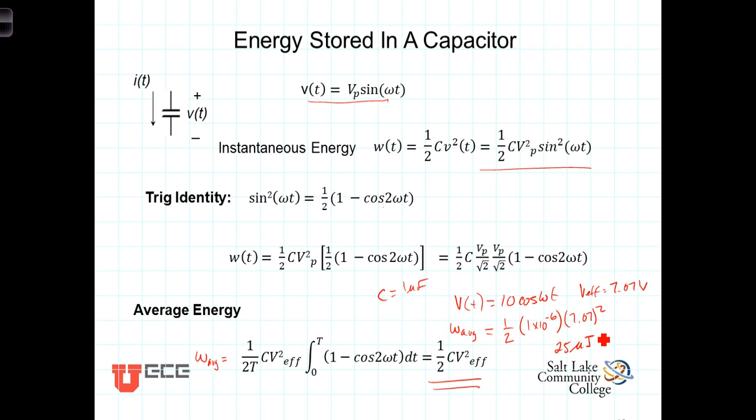During part of the cycle, you'd have more energy. During part of the cycle, you'd have less energy. But the average energy stored in the capacitor would be 25 microjoules for this example.